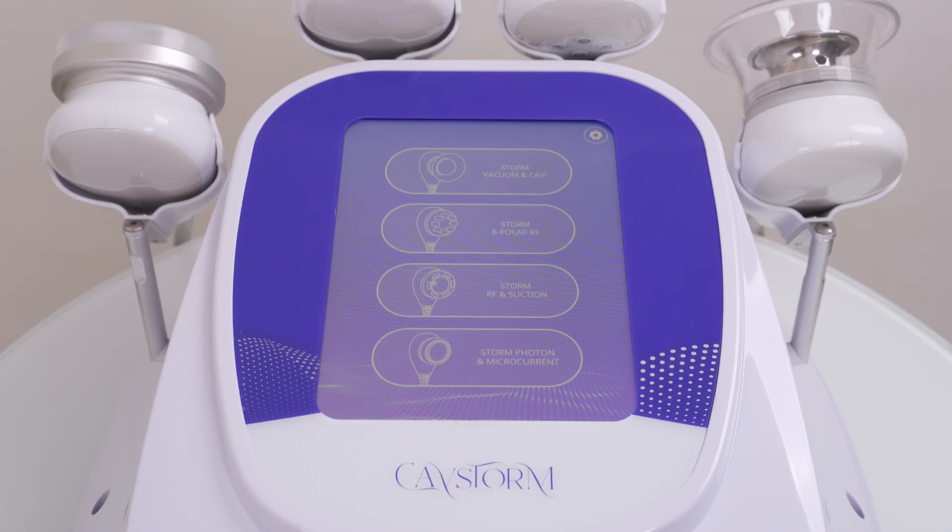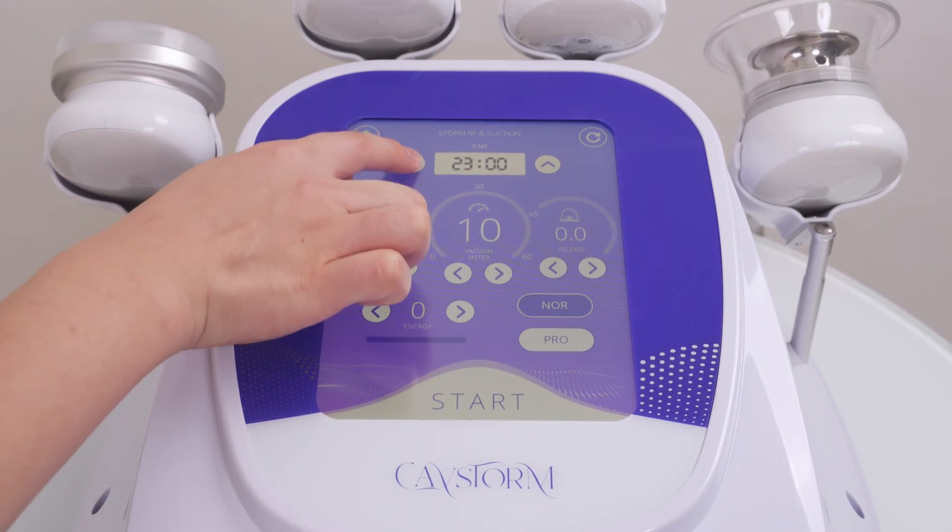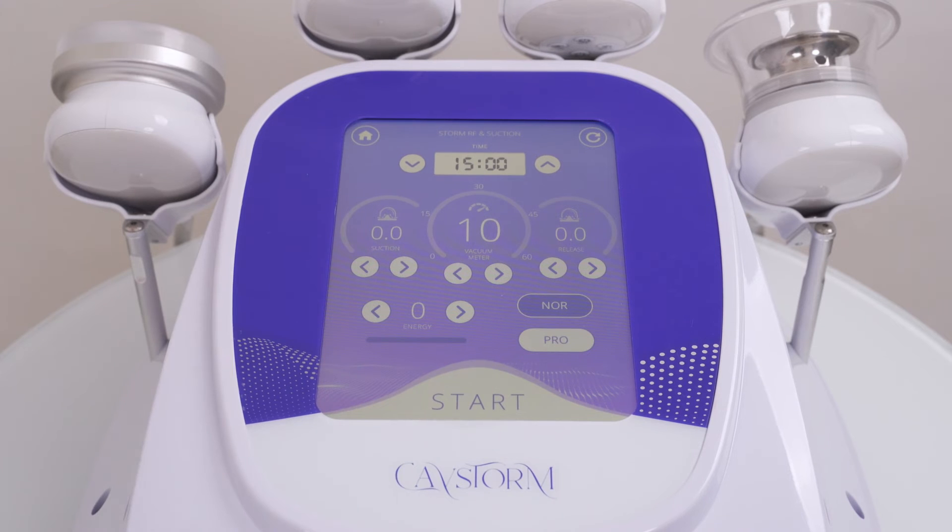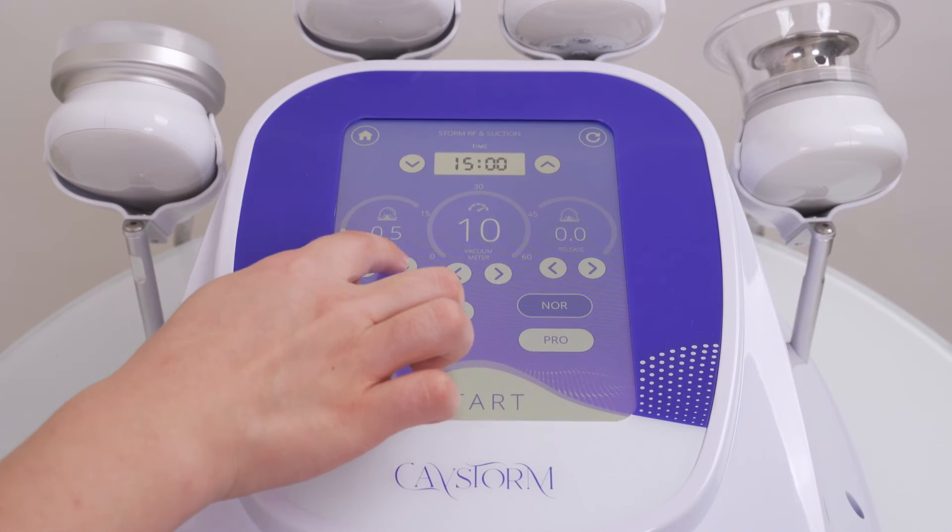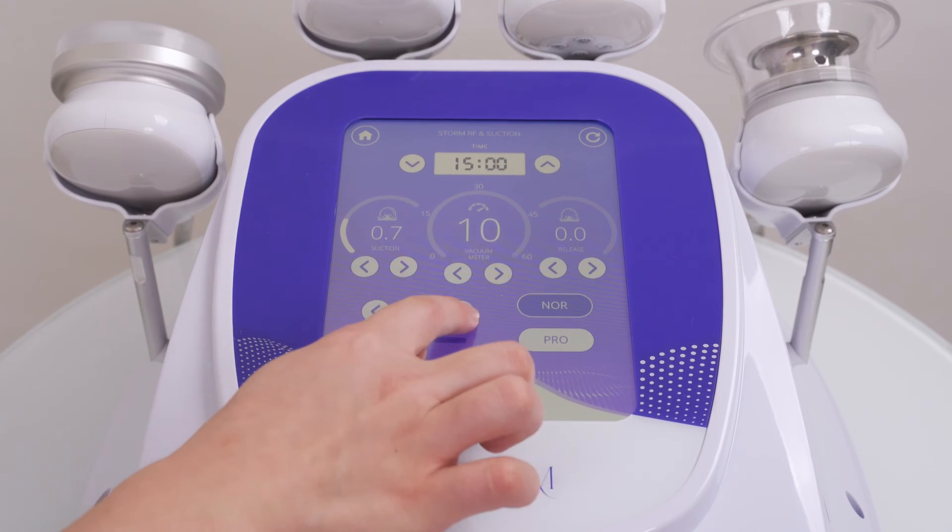Press the Storm RF and suction function button and set parameters. Set time at 15 minutes. Suction options include constant suction mode and suction and release mode. Adjust suction level according to individual endurance. For RF, 2 to 7 NS level is recommended. Normal mode is recommended.